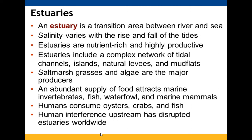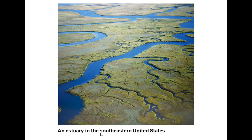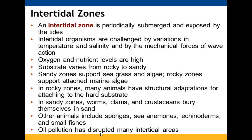An estuary is the transition area between a river and the sea. Its salinity varies with the rise and fall of tides. Estuaries are nutrient-rich and very productive, with complex networks of tidal channels, islands, natural levees, and mud flats. Major producers are salt marsh grasses and algae. An abundant food supply attracts marine invertebrates, fish, waterfowl, and marine mammals. Humans harvest oysters, crabs, and fish from estuaries, but human interference upstream has disrupted estuaries worldwide.